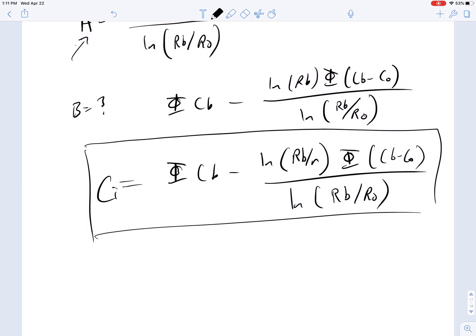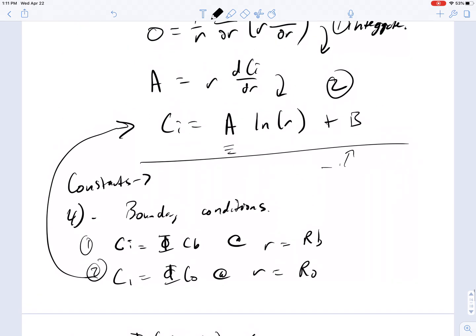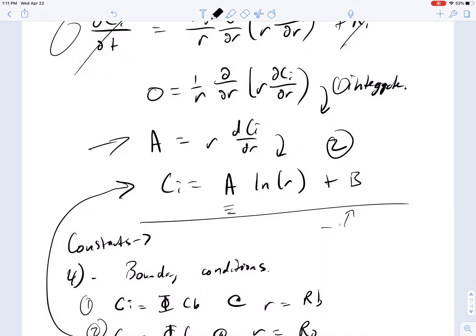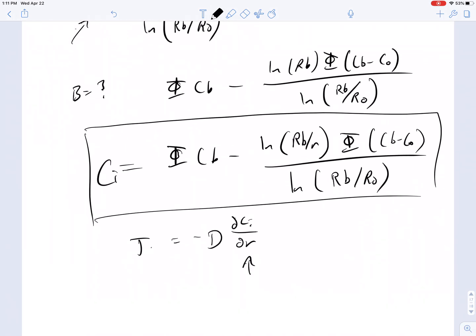So that is the steady-state solution for the distribution or flow of drug in this type of geometry. You can easily determine flux by just recalling that that flux term J is equal to minus D times ∂C_I/∂R. You can just take the derivative once or just use the solution which you solved on the way, which was the first integration, A equals RdC_I/dR. So this you can just substitute in directly for here using our value of A and calculate the flux of your drug through this geometry.